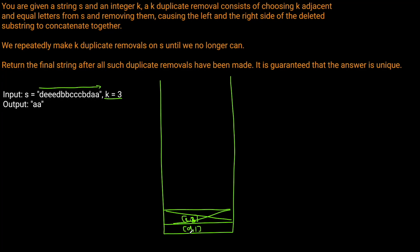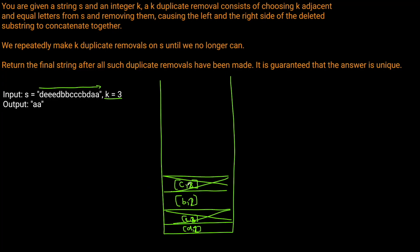Now we get to d, and the only thing left on the stack is [d, 1], so we simply increment d's count to get [d, 2]. Then we get to b — b doesn't equal d — so we add [b, 1]. We see another b, which equals the top of the stack, so we increase the count to 2. Then we're at c: we add [c, 1], see another c so the count becomes 2, then a third c giving us 3 — which equals k — so we remove it.